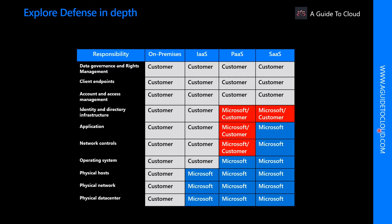To ensure proper security controls are provided, a careful evaluation of services and technology choices becomes necessary. As you can see in the diagram, SaaS requires less involvement from a customer point of view, while on-premises requires more. There are also shared responsibility models between the customer and Microsoft in terms of PaaS and SaaS as well.